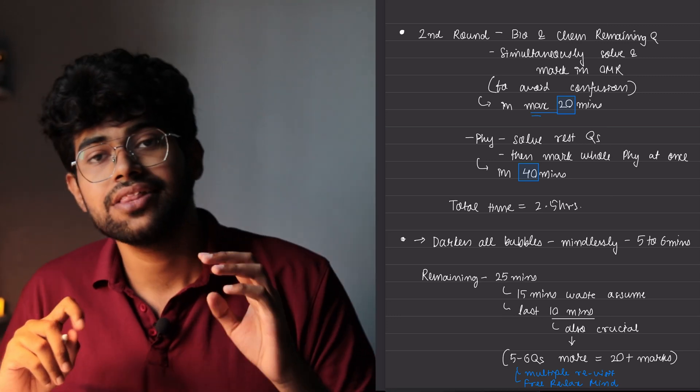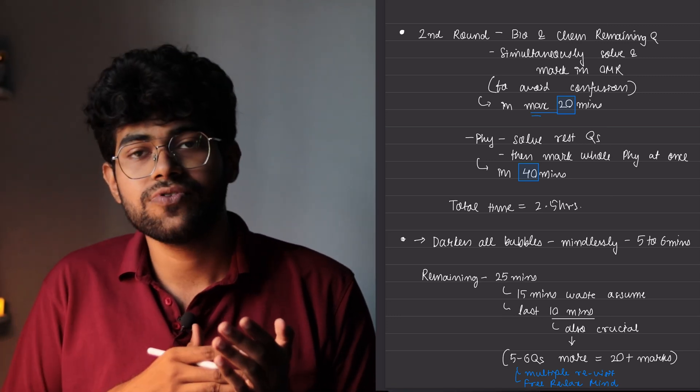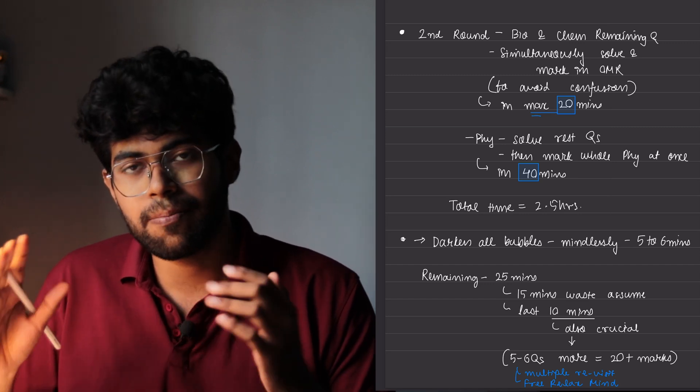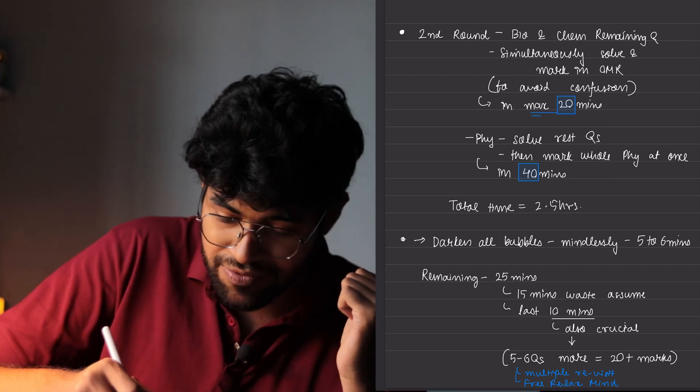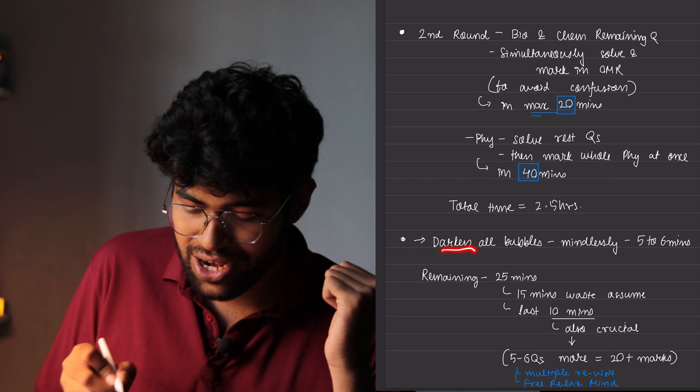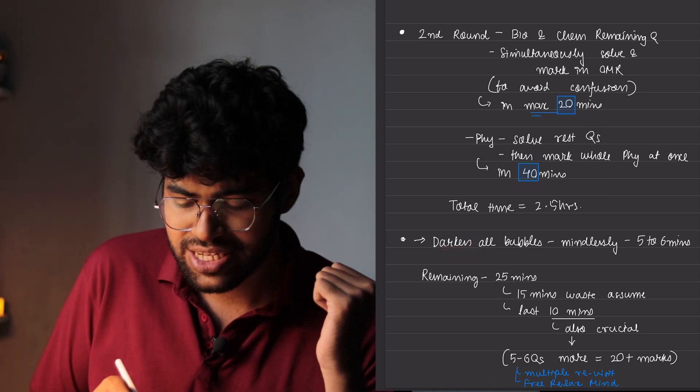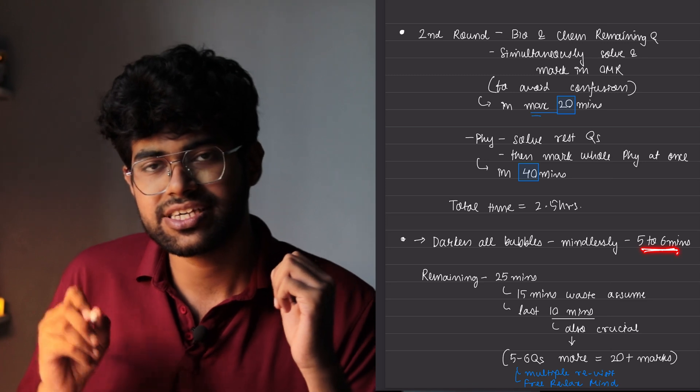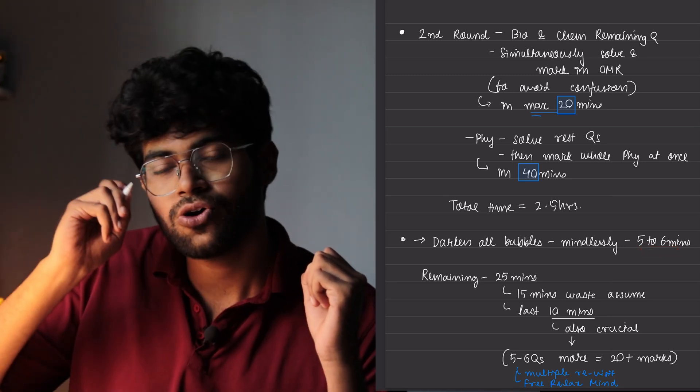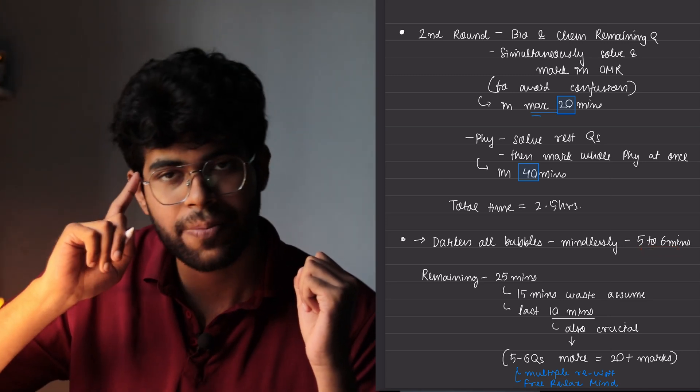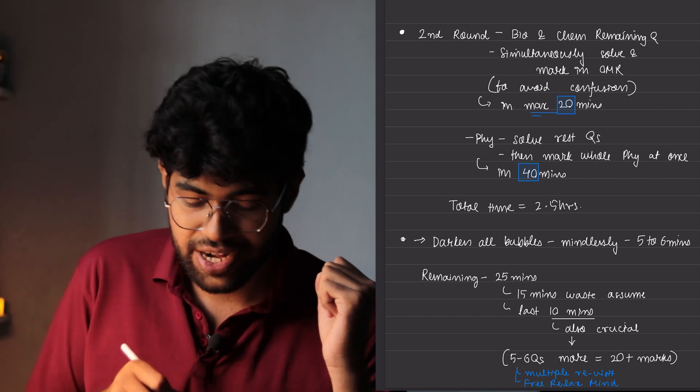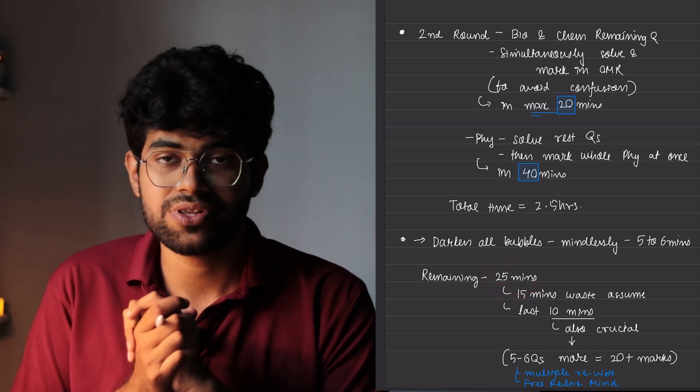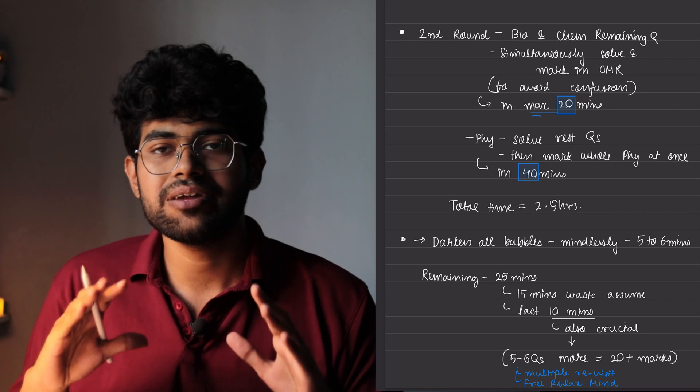So the total time will be 2.5 hours. And in the 2.5 hours, you would have gone through the whole paper, solved it in two rounds and also marked the bubbles in the OMR. Now after this, you only need to darken all the bubbles and you can do this completely mindlessly. So you will only require maximum five to six minutes to do this. This will also serve as a second break to your brain. So you will be left with 25 minutes right now. But one thing you have to keep in mind before the exam is that you will have to waste 15 minutes.